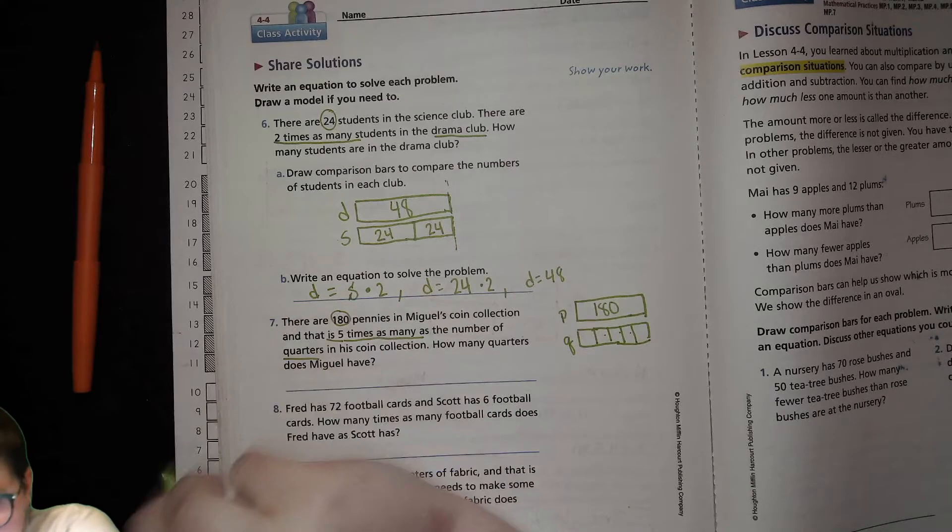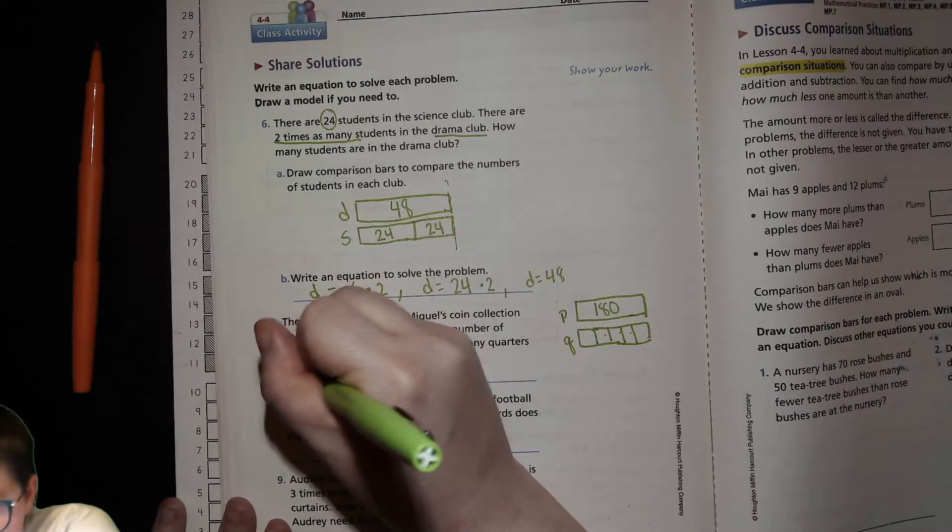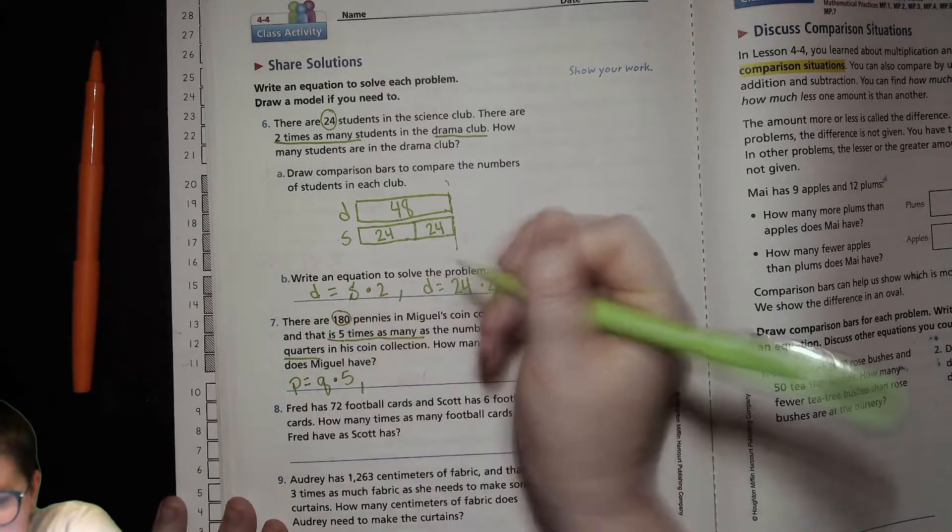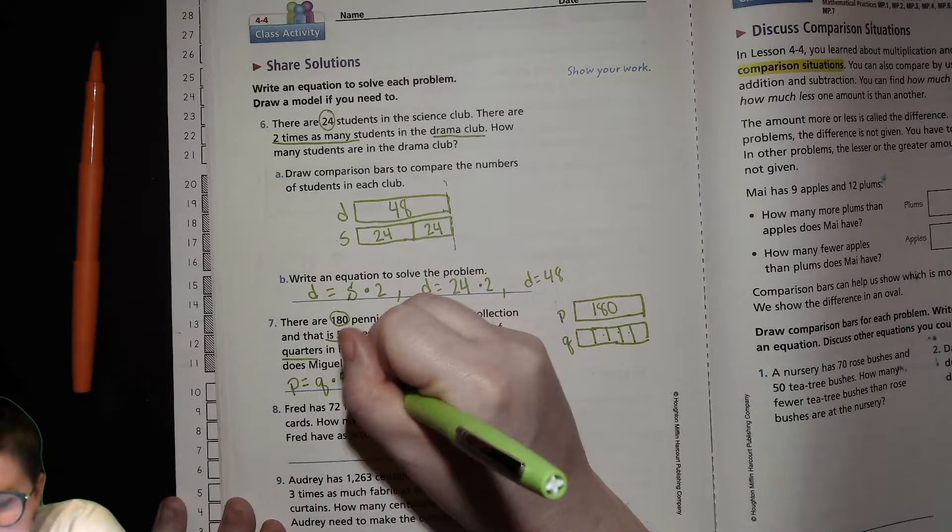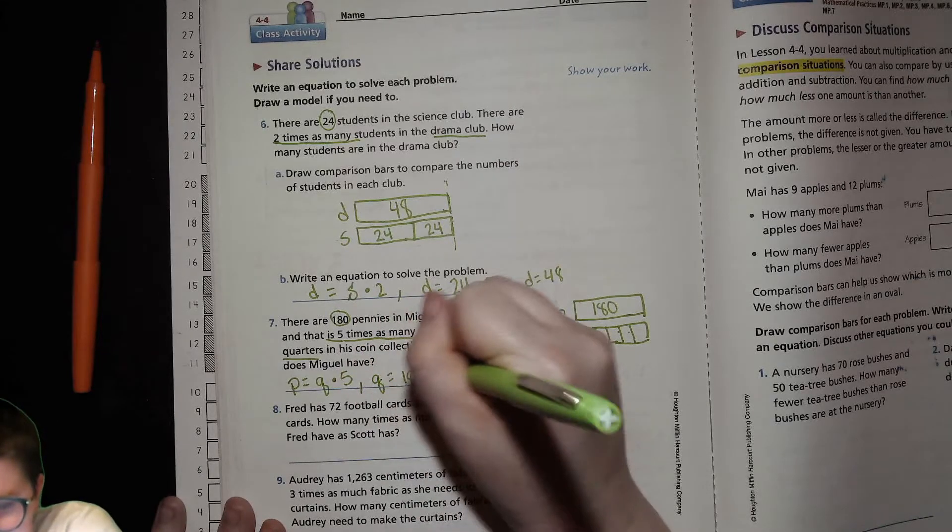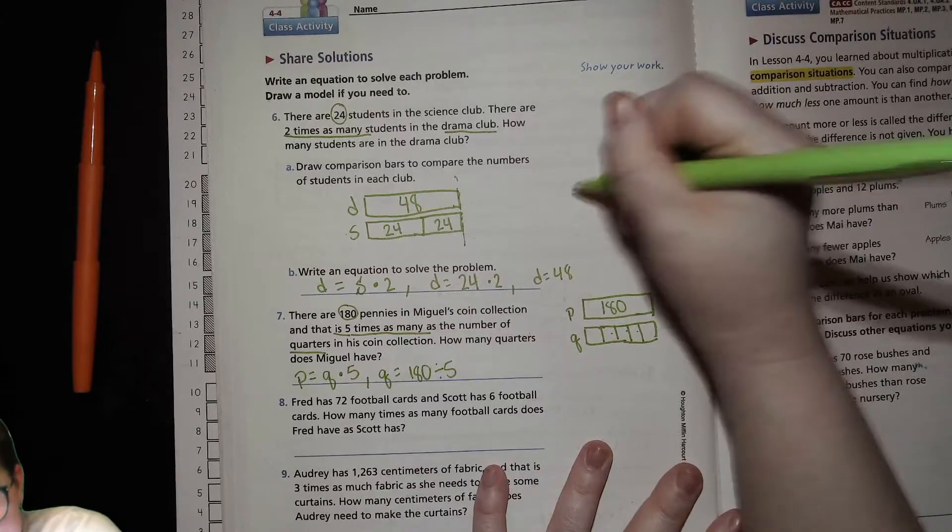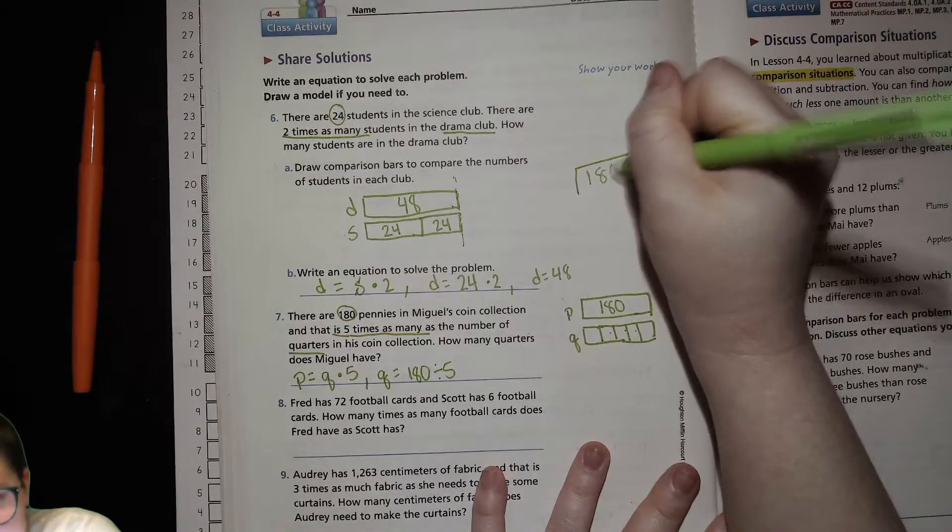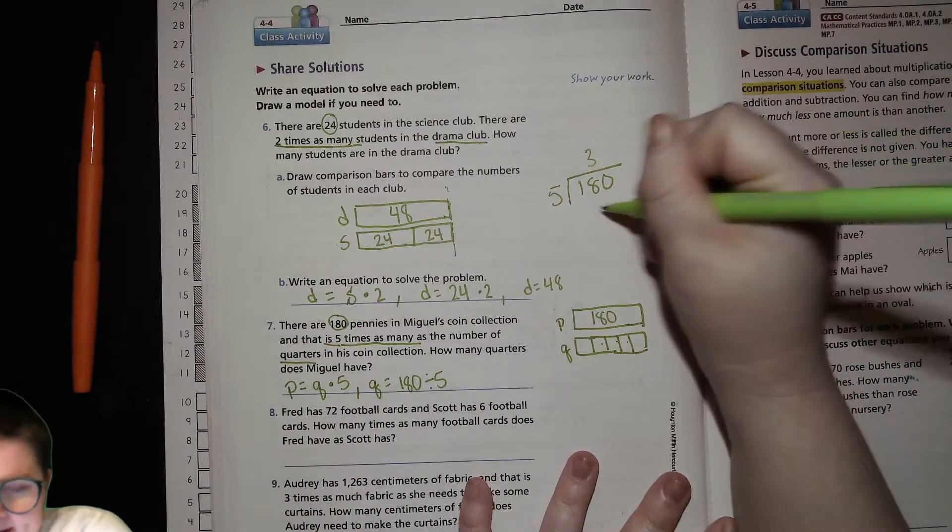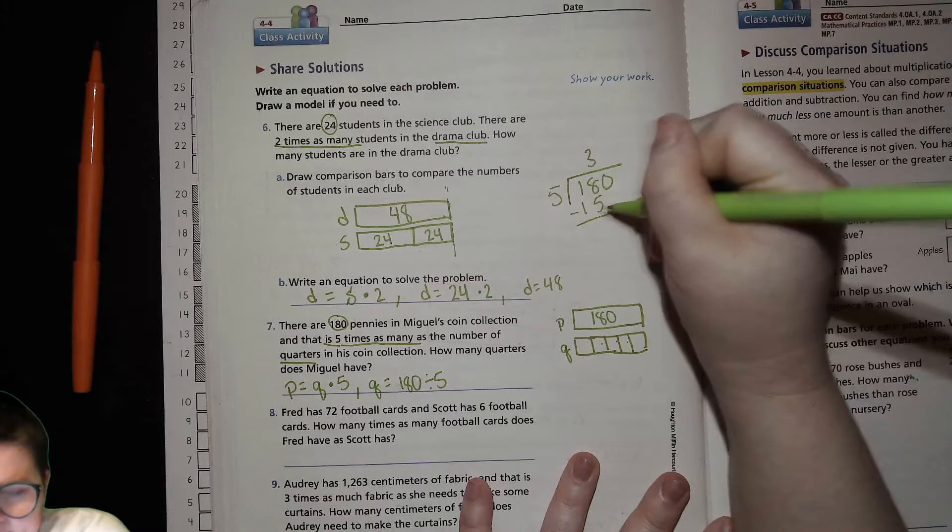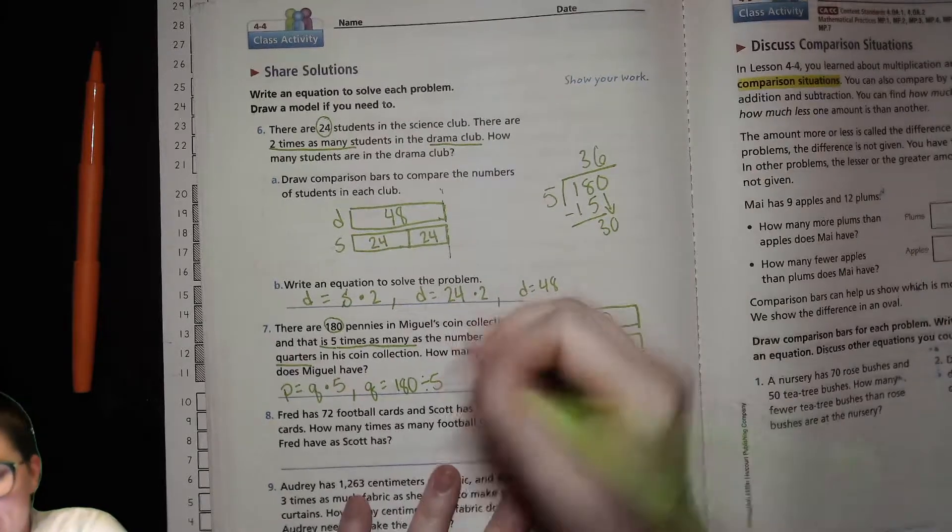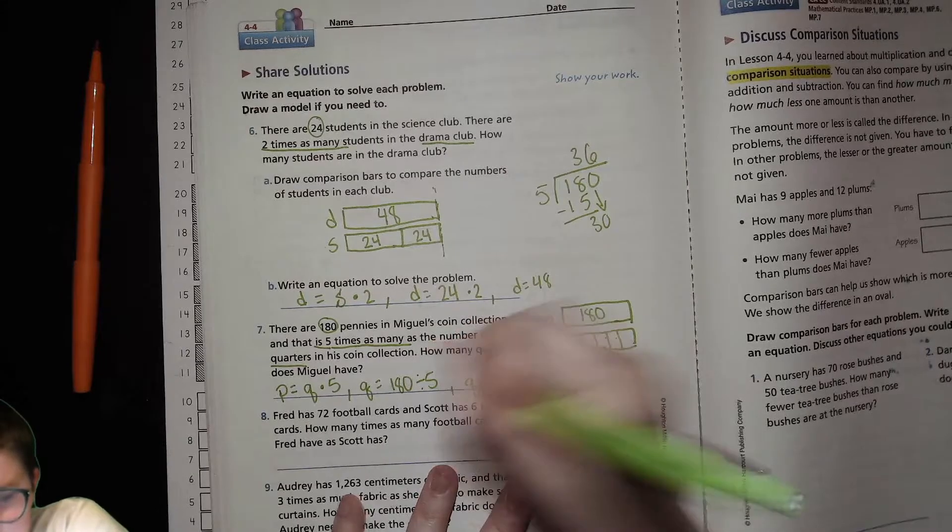So we'll do pennies. If pennies equals quarters times five, or quarters equals 180 divided by five. And then all we have to do there, we'll use this right here. 180 divided by five. Five goes into 18 three times. And you get 15, bring the zero down. Five goes into 30 six times. So it'll be 36.